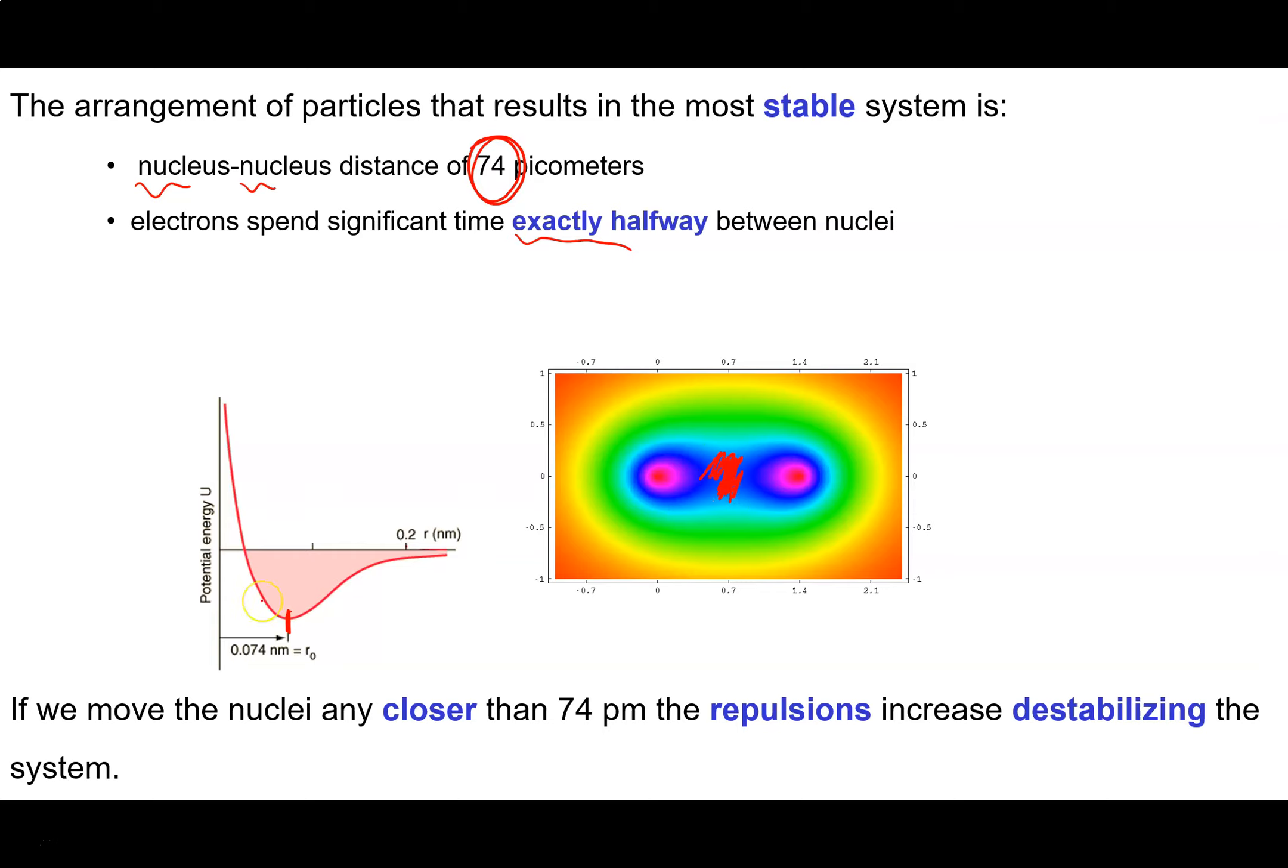Now, if I move the two atoms closer together than 74 picometers, then I start to increase the repulsions due to the proton-proton repulsion. And so this kind of destabilizes my molecule.